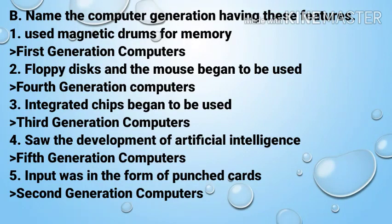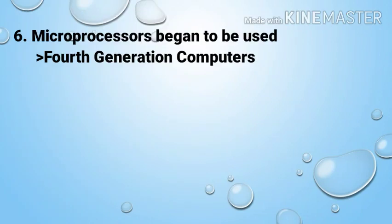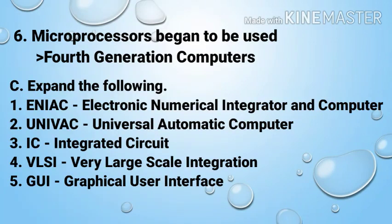Number B: Name the computer generation having these features. Number one: used magnetic drums for memory — First Generation computers. Number two: floppy disc and the mouse began to be used — Fourth Generation computers. Number three: integrated chips began to be used — Third Generation computers. Number four: saw the development of artificial intelligence — Fifth Generation computers. Number five: input was in the form of punch cards — Second Generation computers. Number six: microprocessors began to be used — Fourth Generation computers.